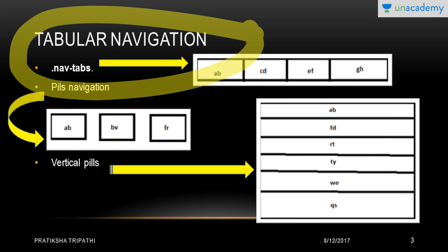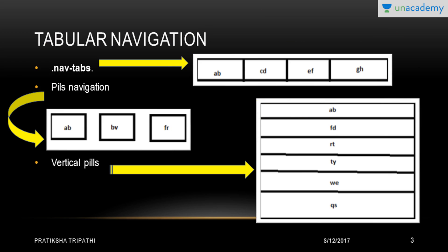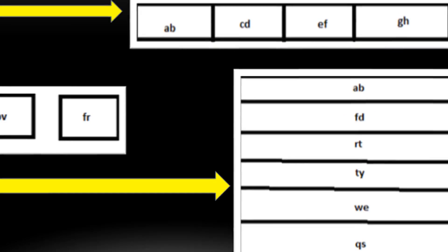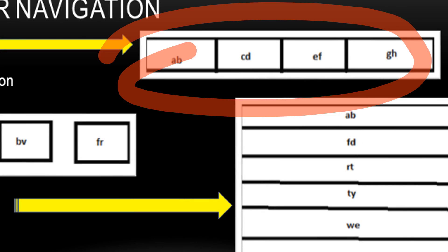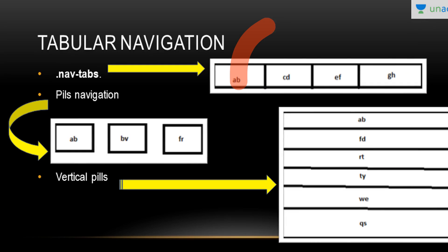The very first type we basically use is tabular navigation, or we say tabs. You must have also used it — for example, when you open Google Chrome and want to open a new page, you click on a new tab, and a fresh page opens. So it is called tabular navigation or tabs. The class you have to incorporate in your code is .nav-tabs. The tabs look like this — one after the other, for example labeled a, b, c, d or page names 1, 2, 3, 4.